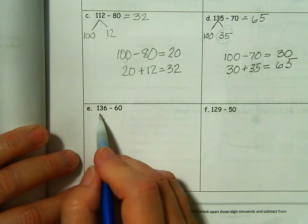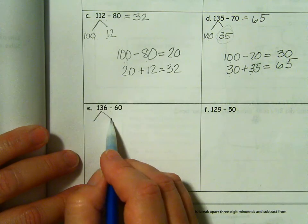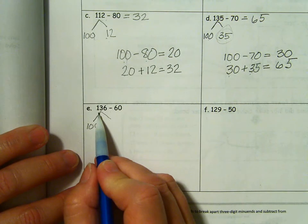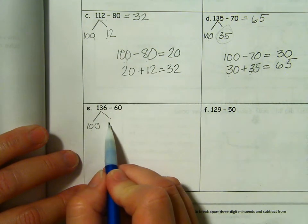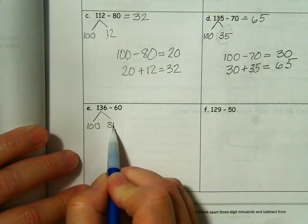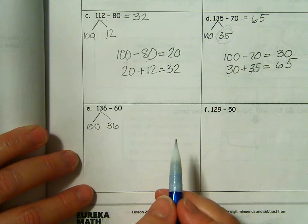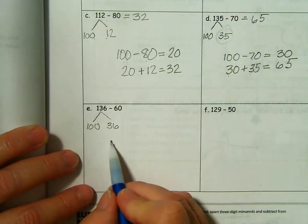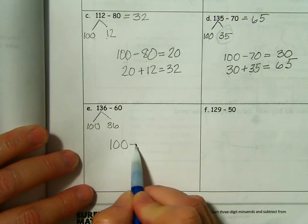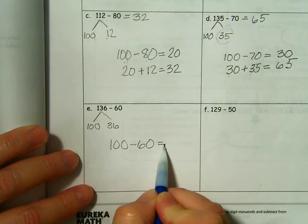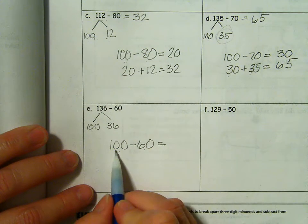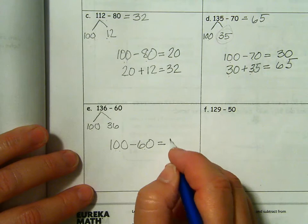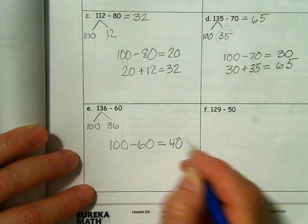136. Remember, we always want to get out that 100 because it is so much easier to work with. So if I'm breaking up 136, I have 100 and my other part is 36. I am subtracting 60 from the 100 part.